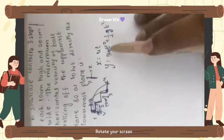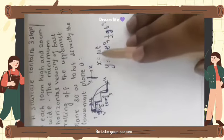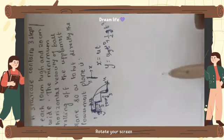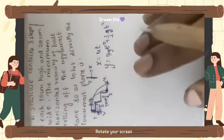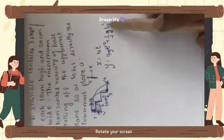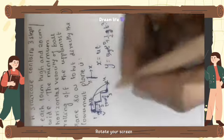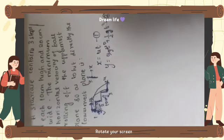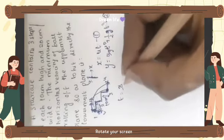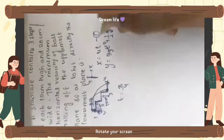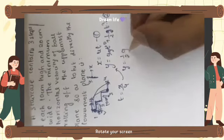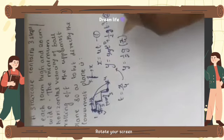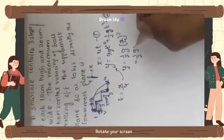Now we have framed these two equations. From them we can find the trajectory of the particle — an equation involving x and y. We eliminate t: from equation 1, t = x/u. Substituting into equation 2 gives y = ½g(x/u)², which simplifies to y = gx²/(2u²).